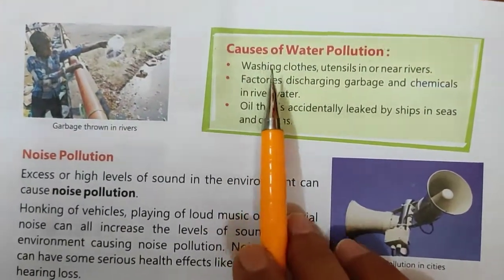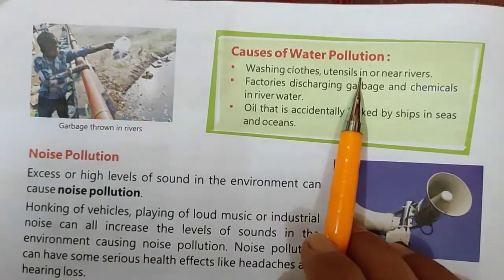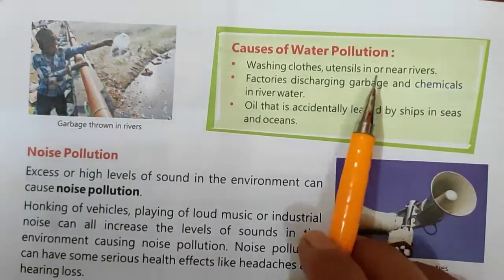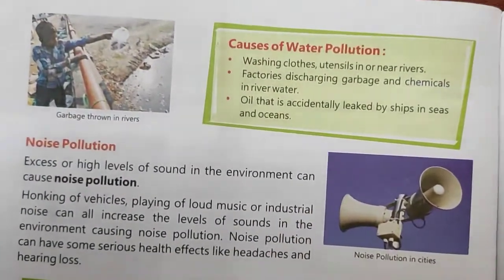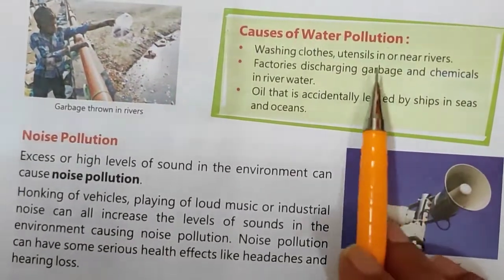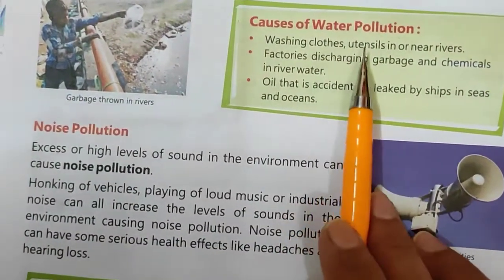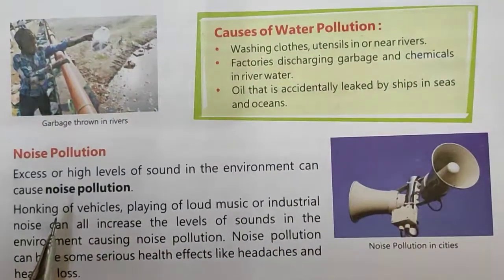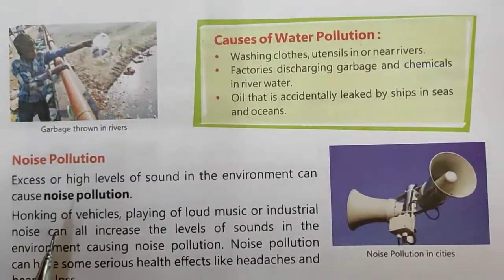Number 1 is washing clothes and utensils in or near rivers. If we are washing clothes or utensils near the rivers, all that dirt and garbage is going into the river water, so obviously it will affect the river water.